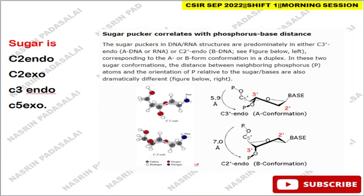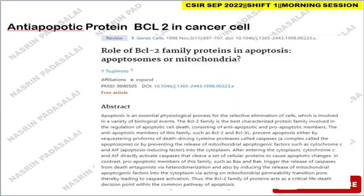The next question is about sugar pucker conformation. The C3'-endo conformation is observed in the A-form of DNA as well as in RNA, whereas C2'-endo conformation is observed in the B-form of DNA. This depends on the phosphorus-to-base distance and the orientation of the phosphorus atom with respect to the sugar and bases.